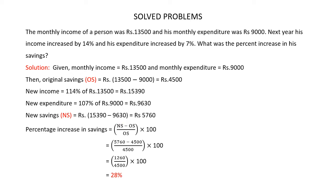Original savings was Rs.4,500 and new savings is Rs.5,760. Percentage increase in savings = (new savings − old savings) / old savings × 100 = (5,760 − 4,500) / 4,500 × 100 = 1,260 / 4,500 × 100 = 28%. So the percentage increase in savings is 28%.